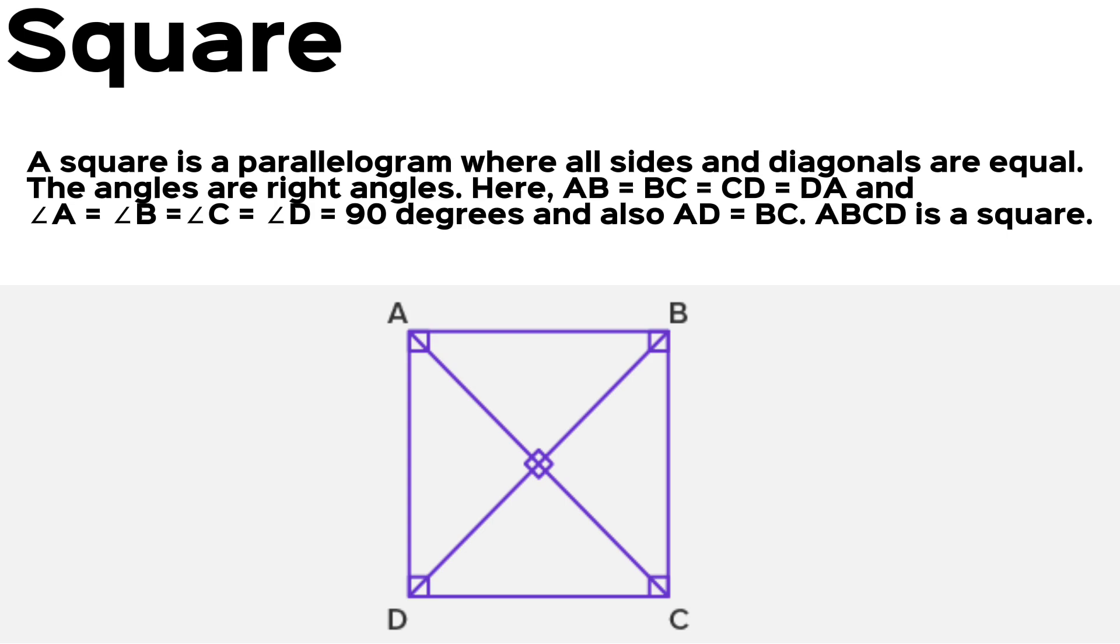And also, AD equals BC. ABCD is a square.